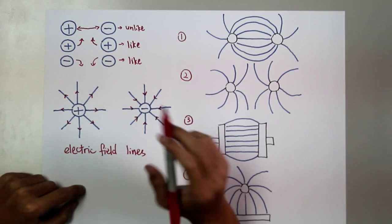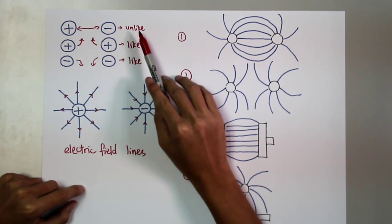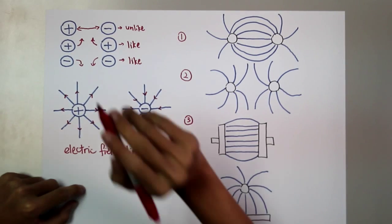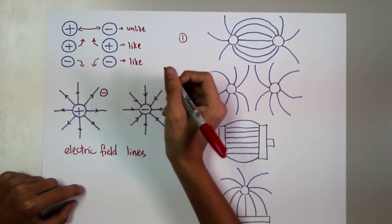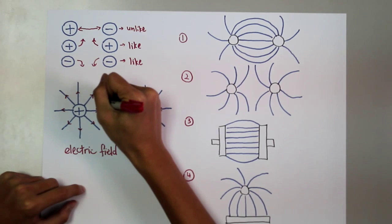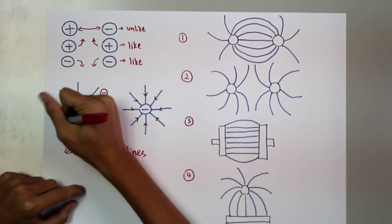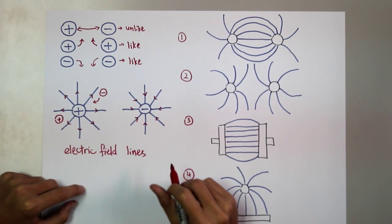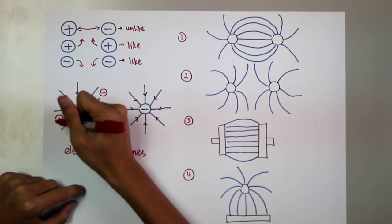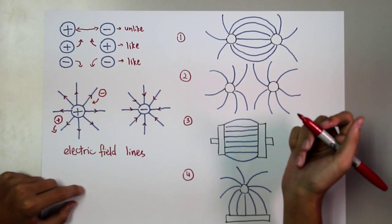As we know, like charges repel and unlike charges attract. So when there is a negative charge, it will be attracted towards the positive charge. If there is a positive charge here, the positive charge will repel.